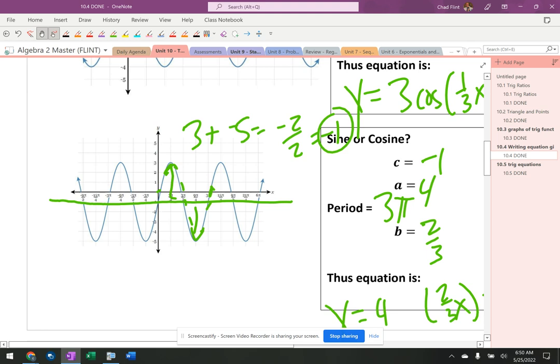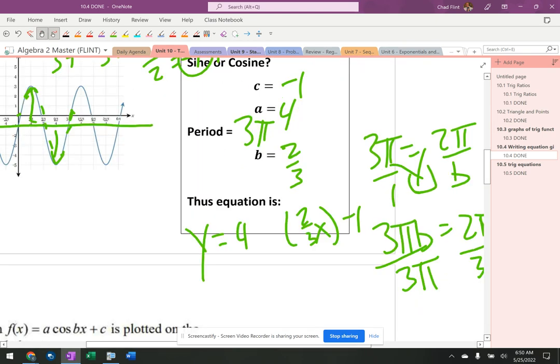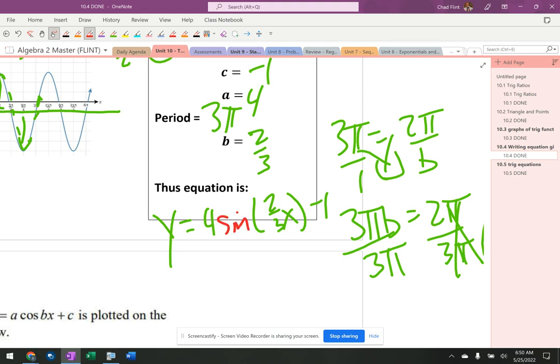It's not making that U-shape with the axis. It's making the, it's making kind of an S shape. So that means this is a sine curve. Alright, so four sine of two thirds x minus one.